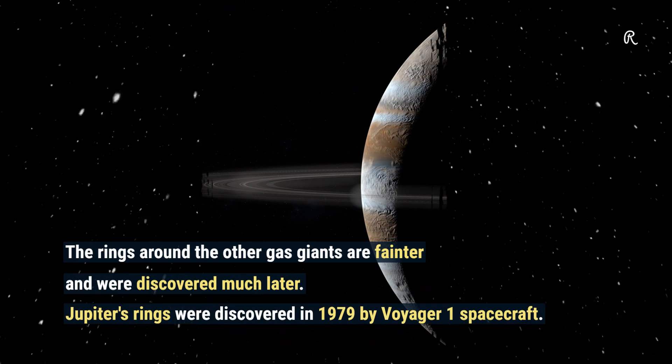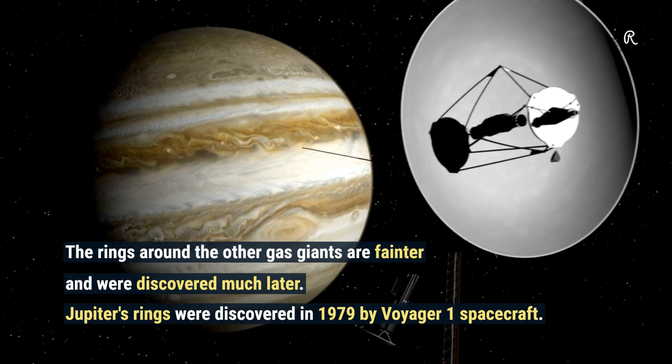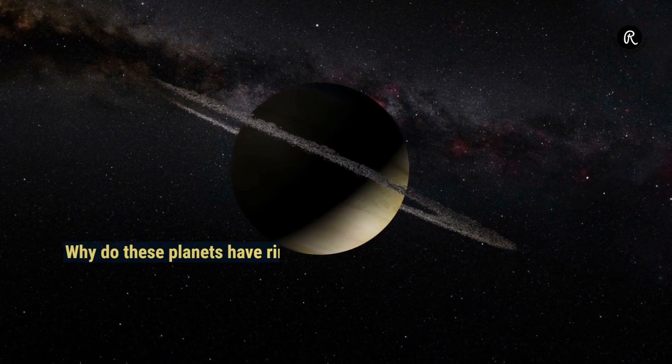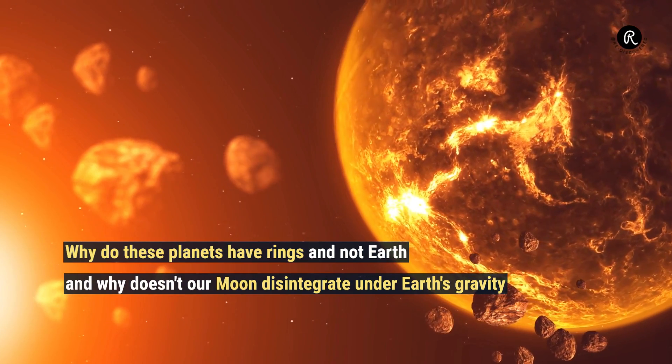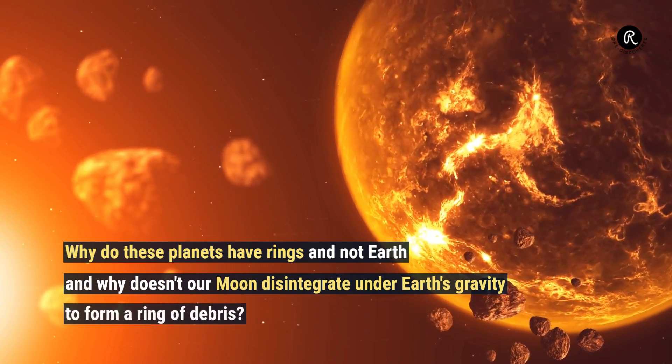Jupiter's rings were discovered in 1979 by Voyager 1 spacecraft. Why do these planets have rings and not Earth? And why doesn't our moon disintegrate under Earth's gravity to form a ring of debris?